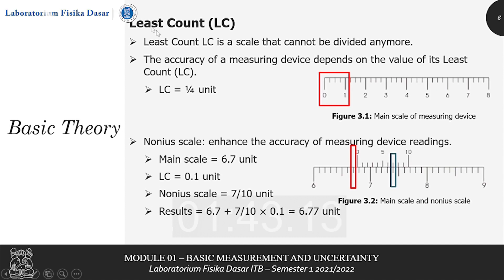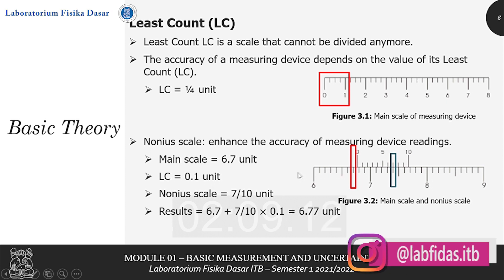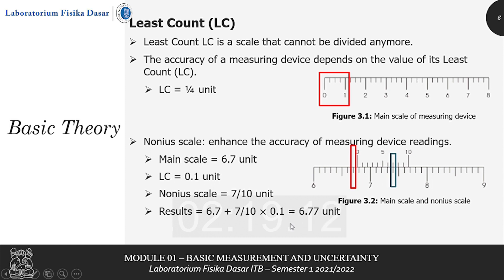Measurement is always accompanied by uncertainty, including caused by the least count — a scale that cannot be divided anymore. The accuracy of a measuring device depends on the value of its least count. For example, this ruler has a least count of a quarter of a unit, and the nonius scale enhances the accuracy of measuring device readings. For example, this measurement has a main scale of 6.7 with least count 0.1, so the nonius scale is 0.7, and the result is 6.77.